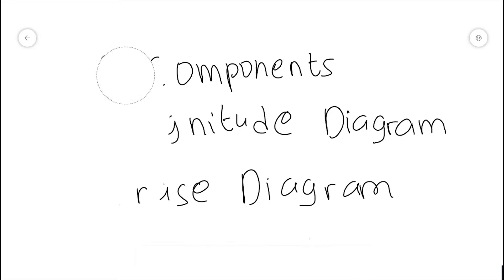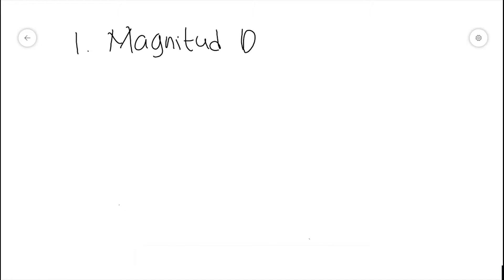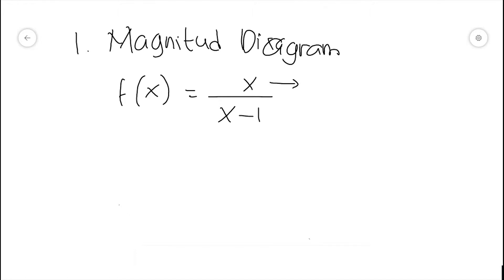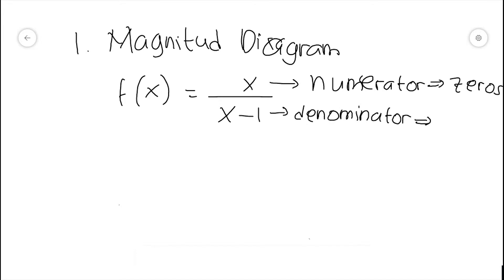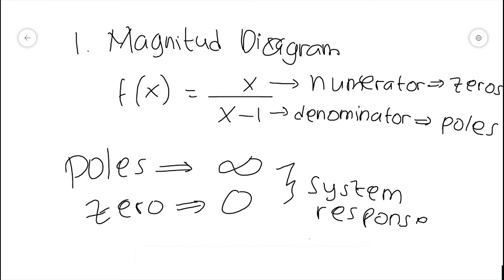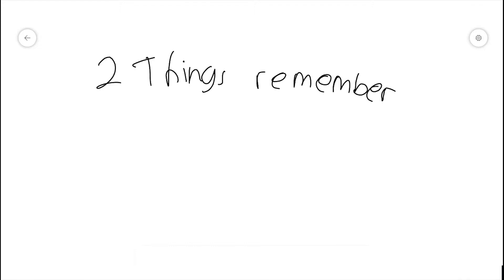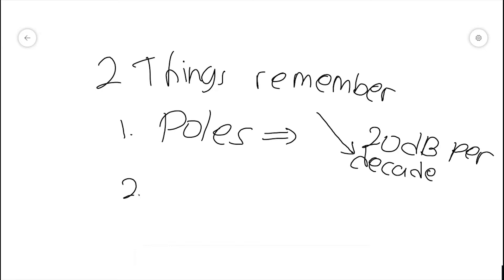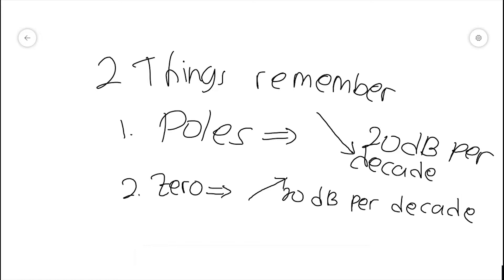Let's have a look at both of these components. The first one is the magnitude diagram. From the basics of control system lectures, we have learned that a transfer function has poles in the denominator and zeros in the numerator. Poles cause the system response to be infinite, while zeros may cause the system response to be null or zero. Poles of a transfer function will cause the magnitude diagram to fall 20 decibels per decade, while zeros will cause it to rise 20 decibels per decade.